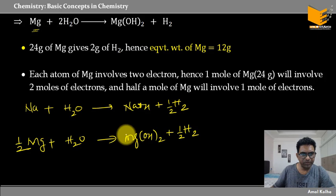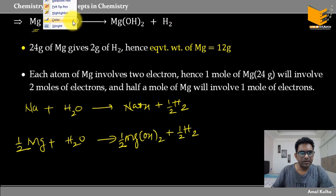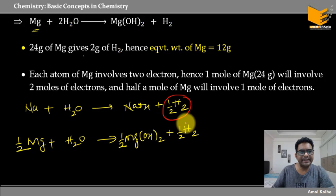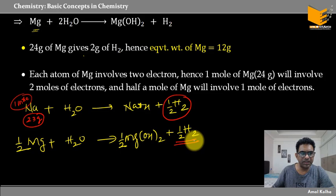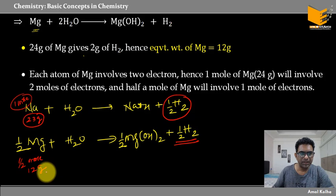Reaction में A is giving electrons to B — so equivalent of A = equivalent of B. जो C और D form हो रहे हैं, those are also going to be equal — उनके भी equivalents equal रहेंगे। Equivalent concept थोड़ा समझने में दिक्कत होता है क्योंकि focus ज़्यादा mole concept पर होता है, which is a major part of chemistry. But equivalent concept is very intuitive — एक बार समझ में आ गया तो calculations में कोई difficulty नहीं।